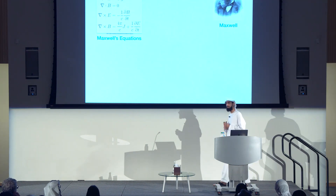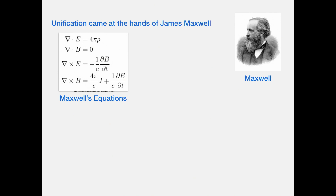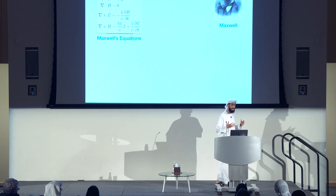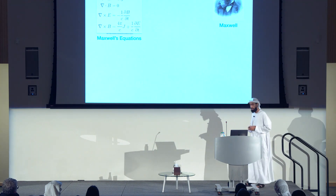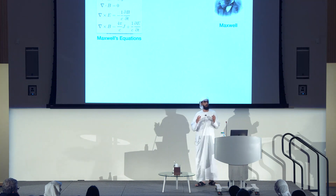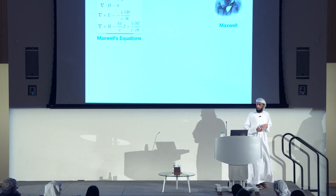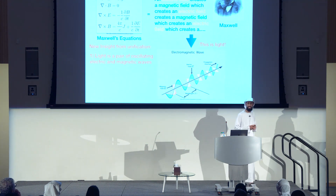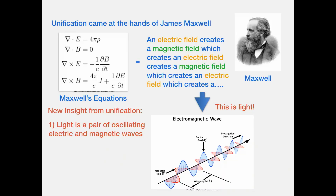Unification came at the hands of James Maxwell — this dashing man with this amazing beard — who wrote down these equations. Part of them were written down before him, but he completed them and gave a consistent set of mathematical equations now named in his honor. These equations say that an electric field produces a magnetic field, but that magnetic field produces an electric field, and so on and so on. It was understood that this described light — that light is actually an electromagnetic wave, a pair of oscillating electric and magnetic fields propagating in space.